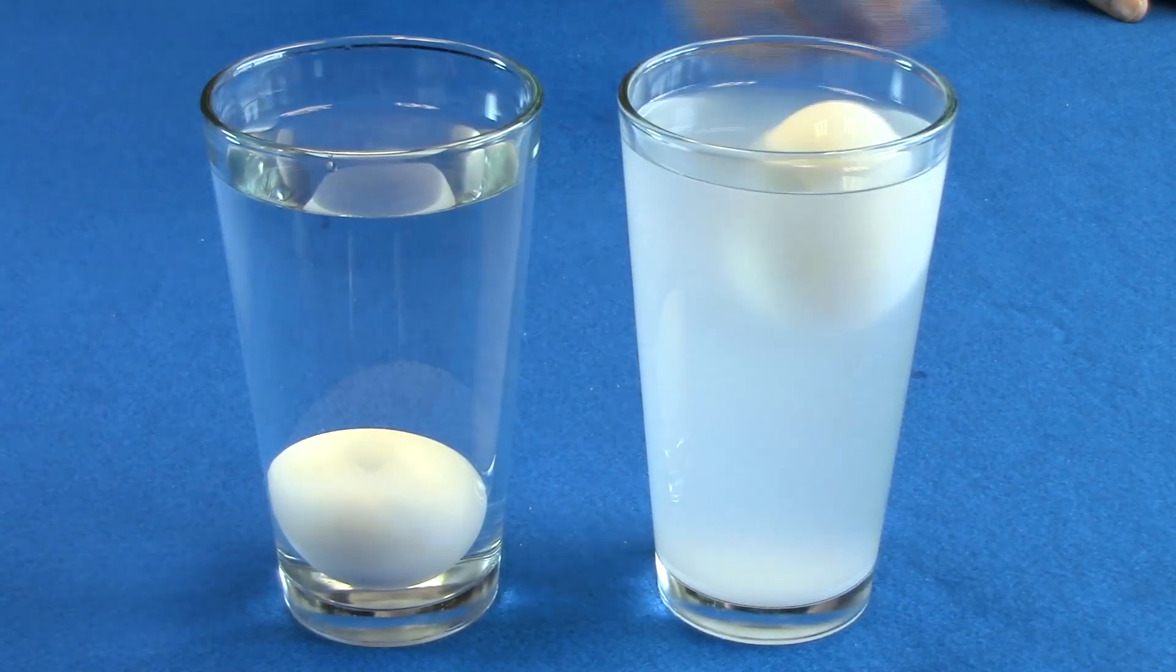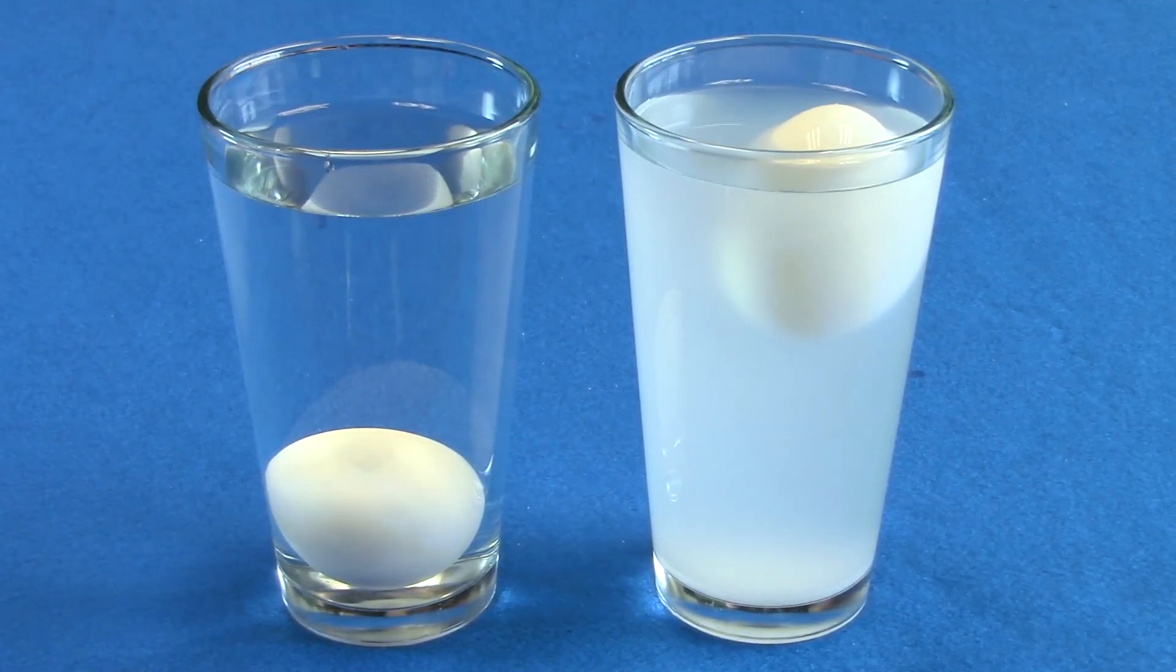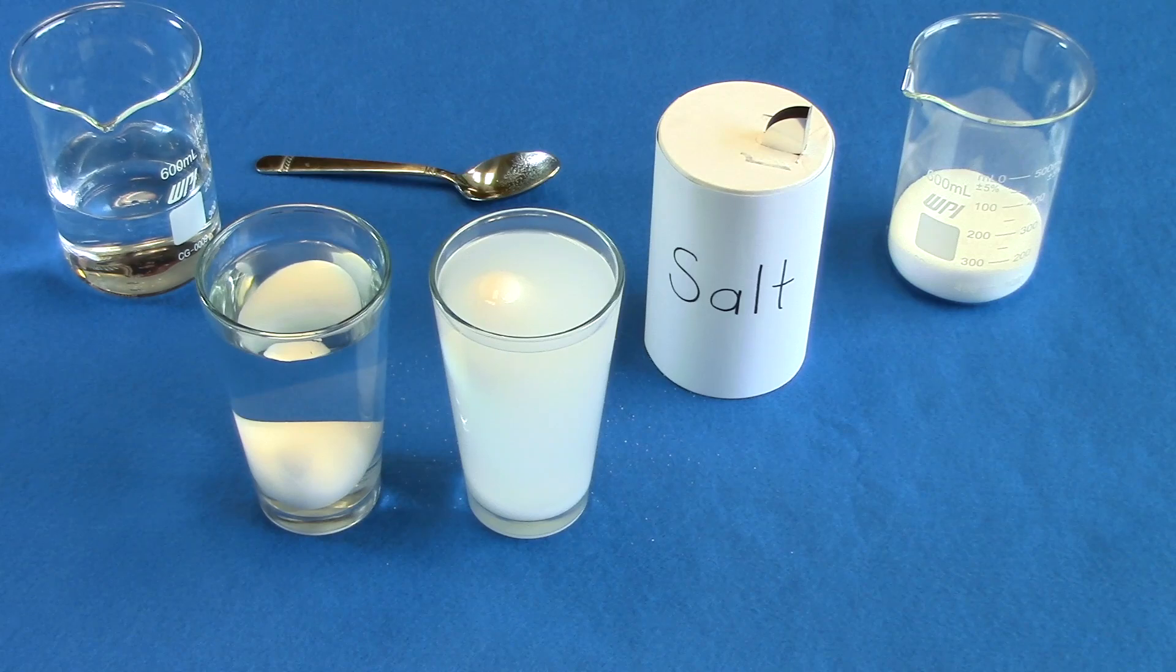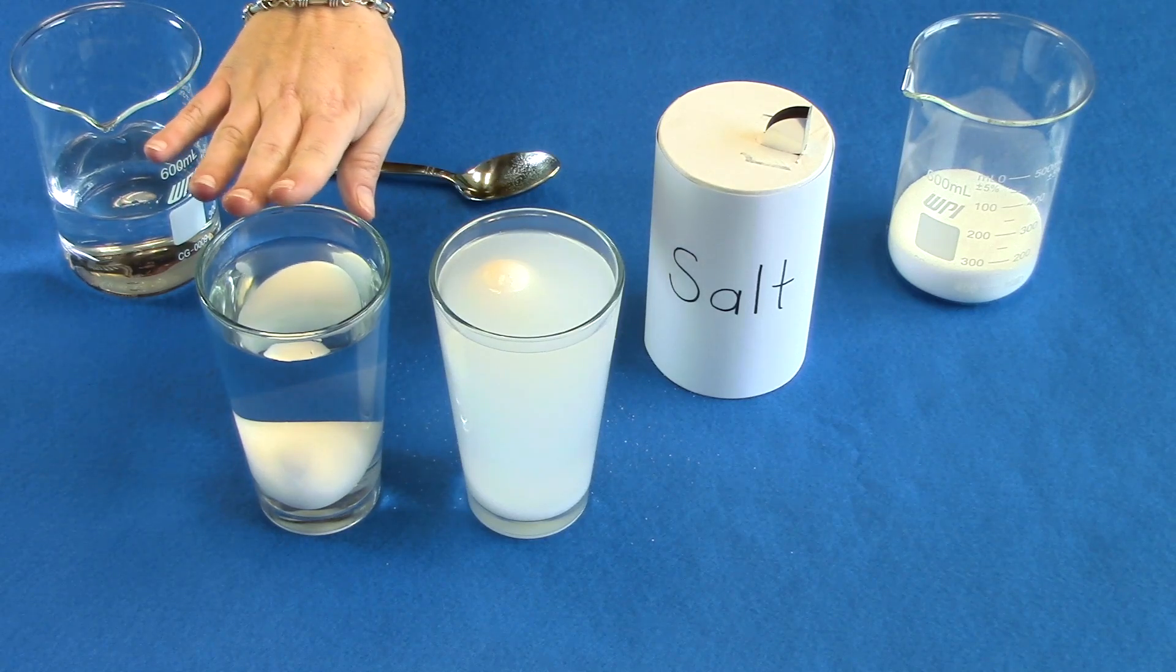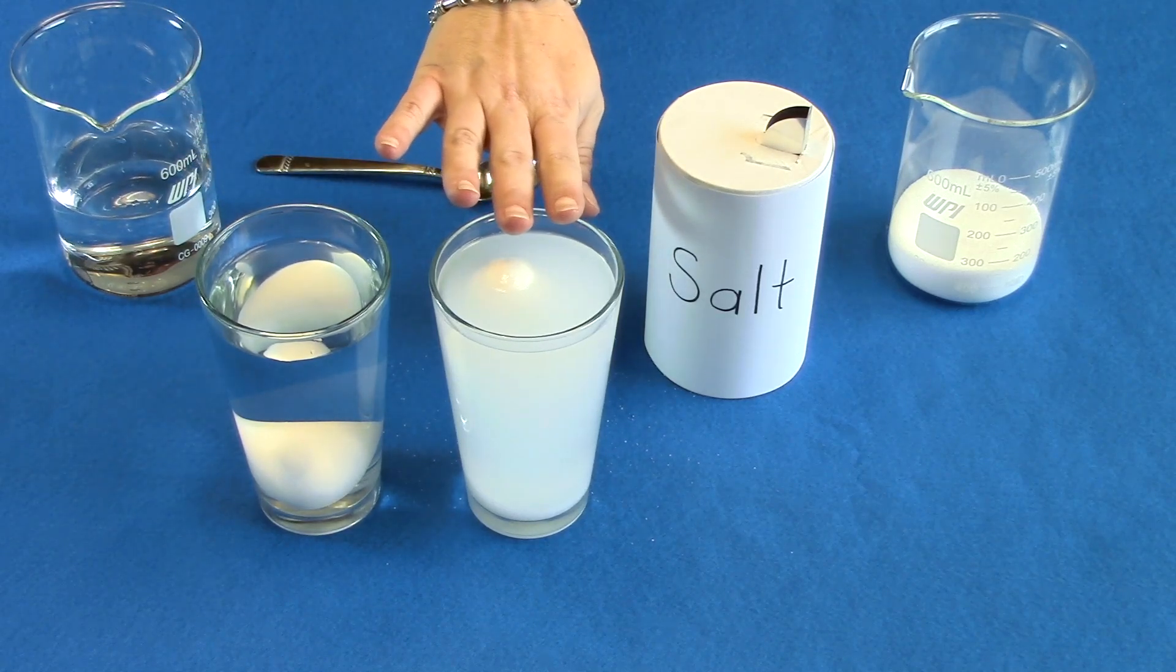You should see that you did indeed make an egg float, but how? The explanation is simple. In step two, the egg dropped to the bottom of the glass, but in step five the egg floated. Why the difference?